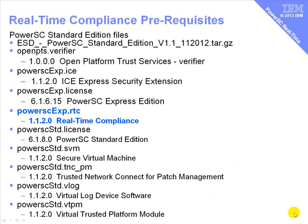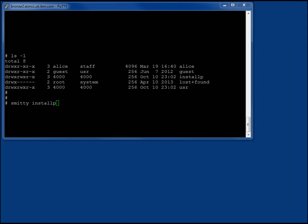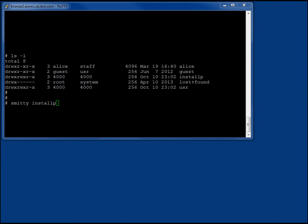We've actually downloaded the standard edition, which includes the express edition features. This is the big file name you get when you download it. Inside this, we're going to find the Power SC Express RTC. We've taken that file, and we've unzipped it and untarred it.